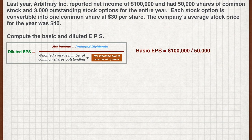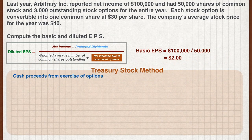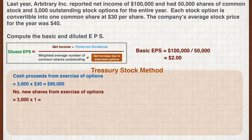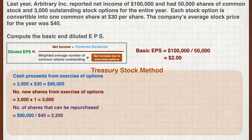Basic EPS: total income available to common stockholders is $100,000 since no preferred shares are mentioned, divided by 50,000 shares, giving a basic EPS of $2.00. For the treasury stock method, first compute cash proceeds if all options are converted: 3,000 stock options at $30 each gives total proceeds of $90,000, and 3,000 new shares are issued. Next, compute how many shares can be repurchased using those proceeds: at the average price of $40, 2,250 common shares can be repurchased. The net shares issued would be 750 shares.